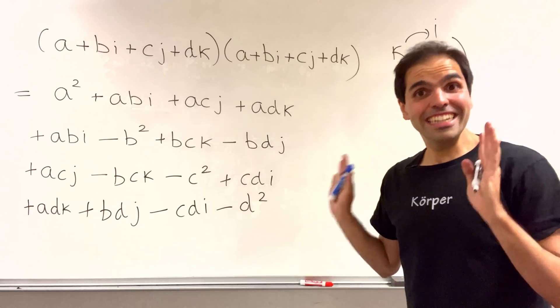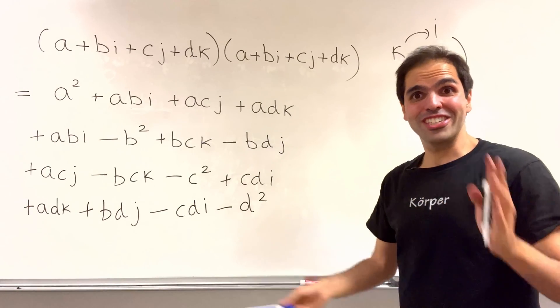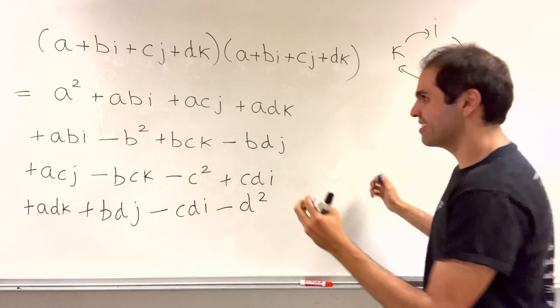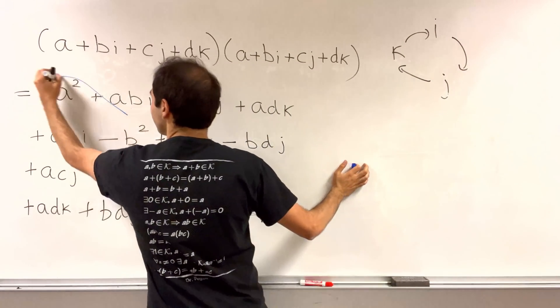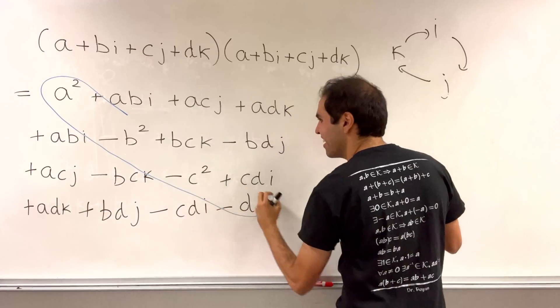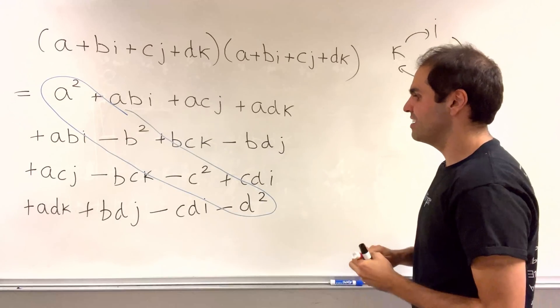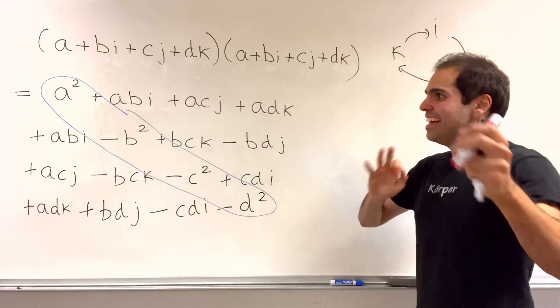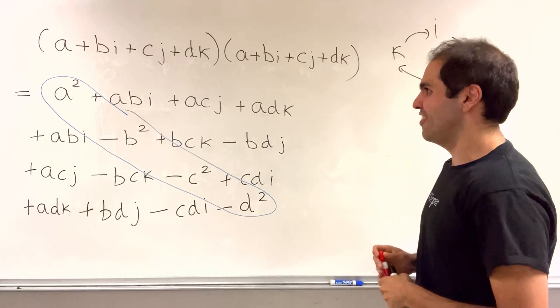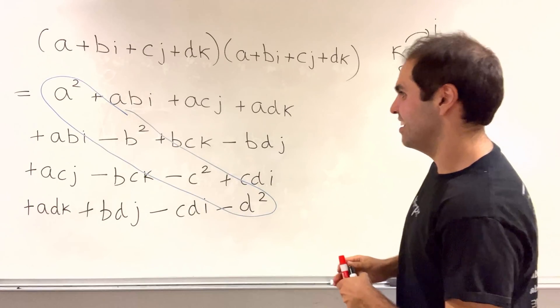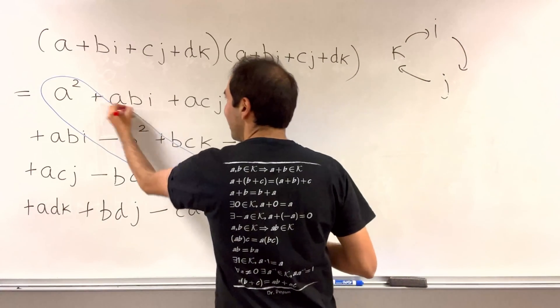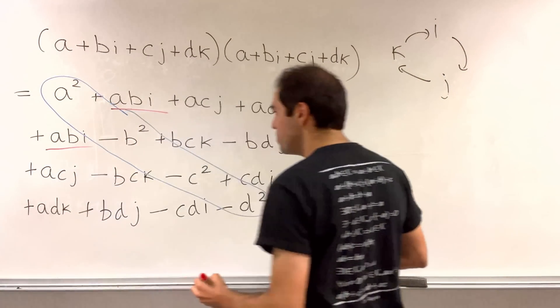All right, and here comes my favorite part, which is the gathering of the terms. So the real terms are here on the diagonal. How cool is that? So a squared minus b squared minus c squared minus d squared. And then there is a cancellation effect going on. So lots of cancellations. So for the i terms, it's abi, abi.